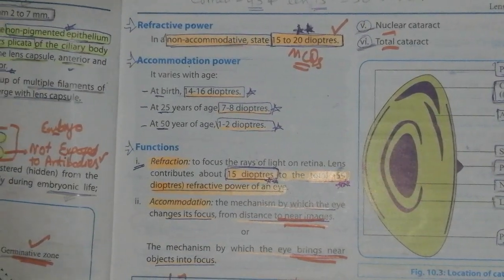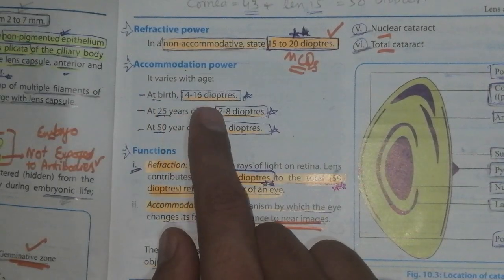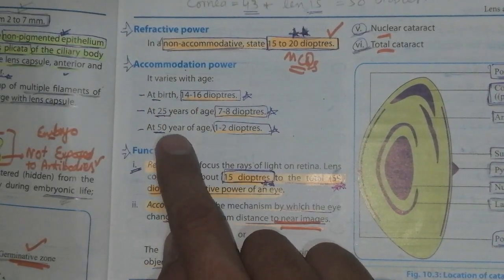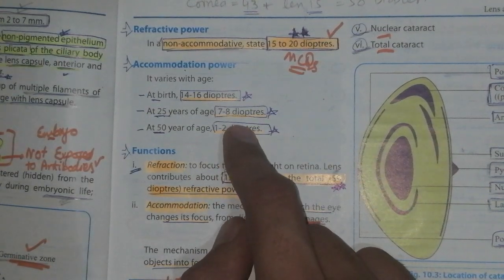Refractive power of the lens: in non-accommodative stage, almost 15 to 20 diopters. Its accommodative power at birth is 14 to 16 diopters, while at 50 years it is 1 to 2 diopters.